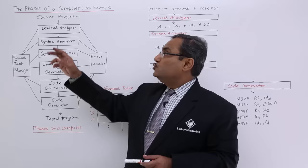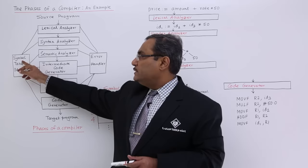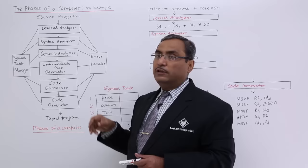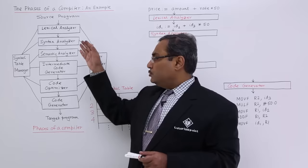From the source program to the target program these are the phases, and there are two other components: the symbol table manager, which is linked with all the phases, and the error handler, which is connected with all the phases to produce the respective error message whenever an error occurs. To explain this in more detail, let us consider one example.